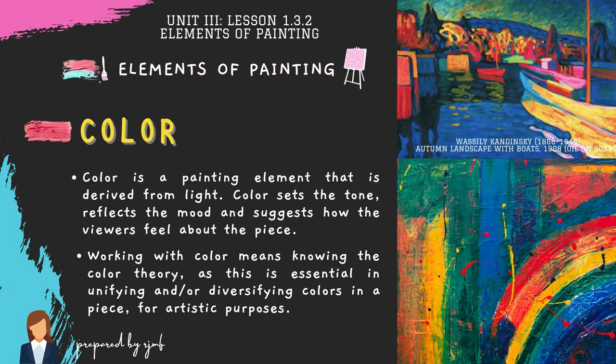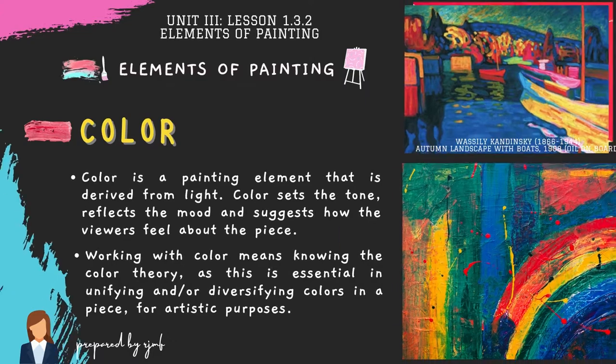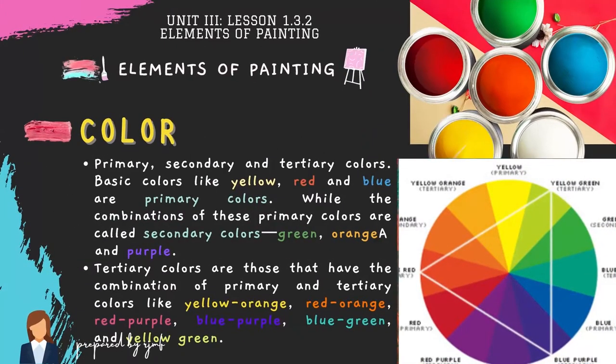Observe the pictures in front showing the three different types of colors: primary, secondary, and tertiary. Basic colors like yellow, red, and blue are primary colors. Combinations of these primary colors are called secondary colors: green, orange, and purple. Tertiary colors are combinations of primary and secondary colors, such as yellow-orange, red-orange, red-purple, blue-purple, blue-green, and yellow-green. All 12 colors are seen in the color wheel.